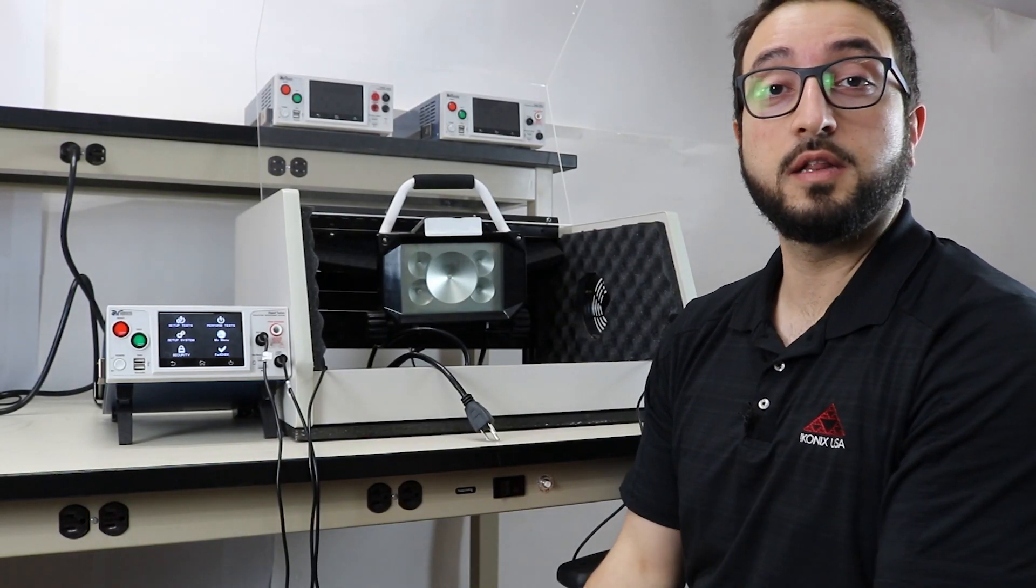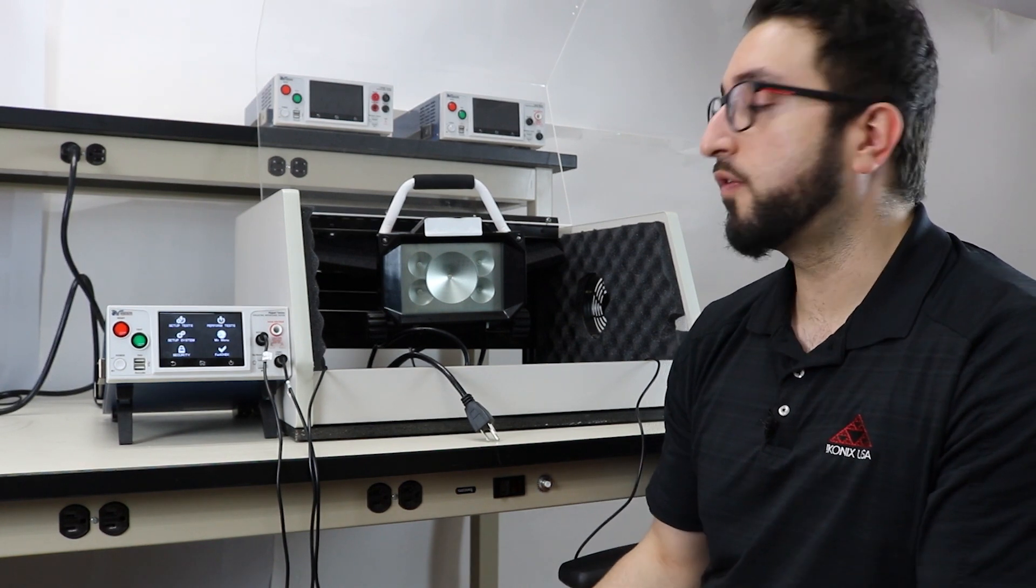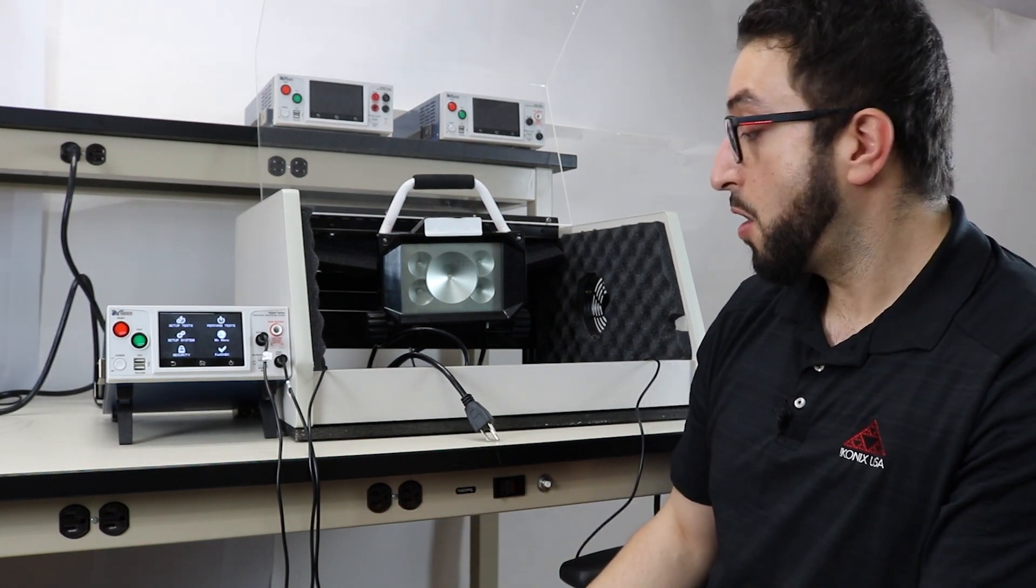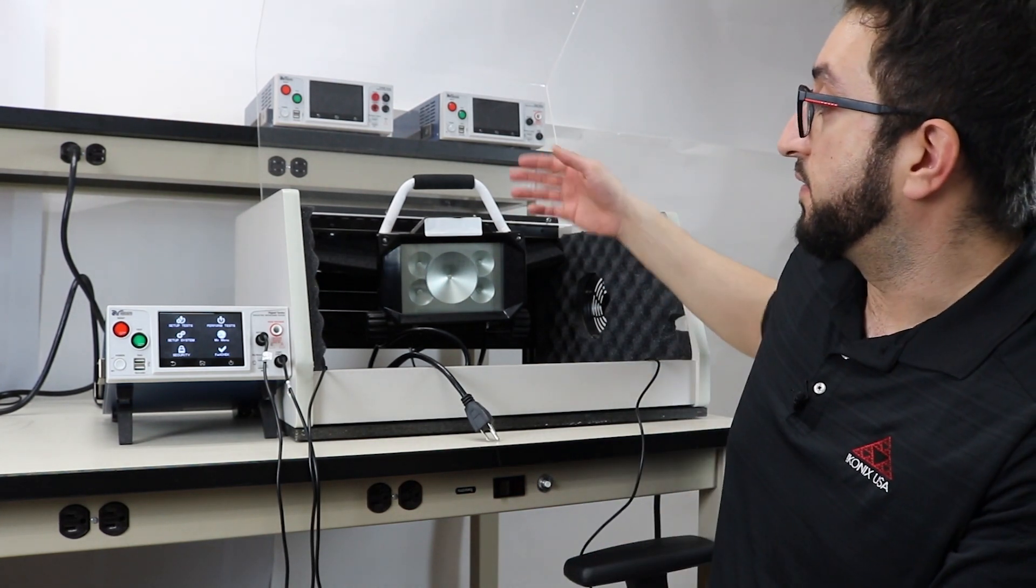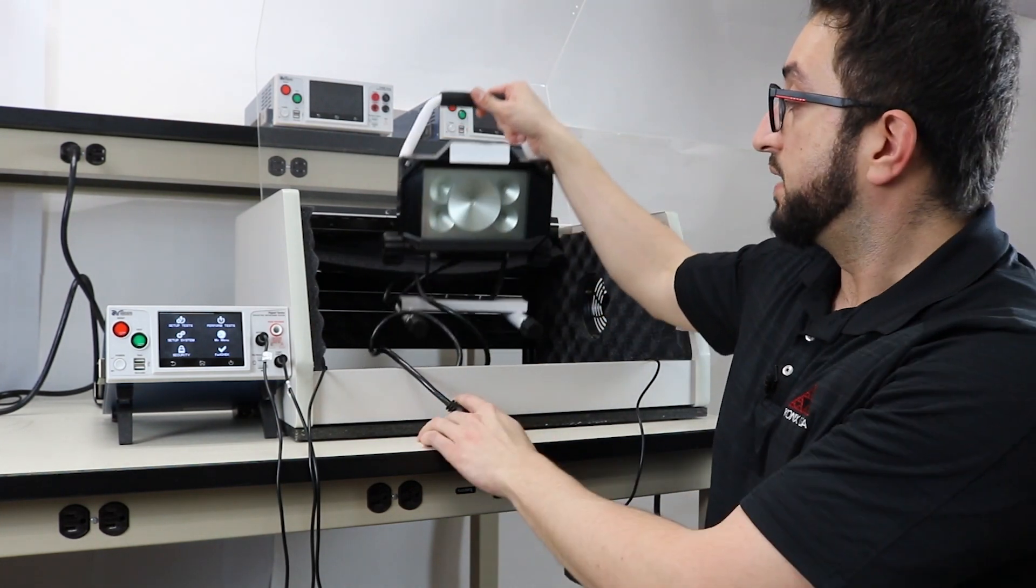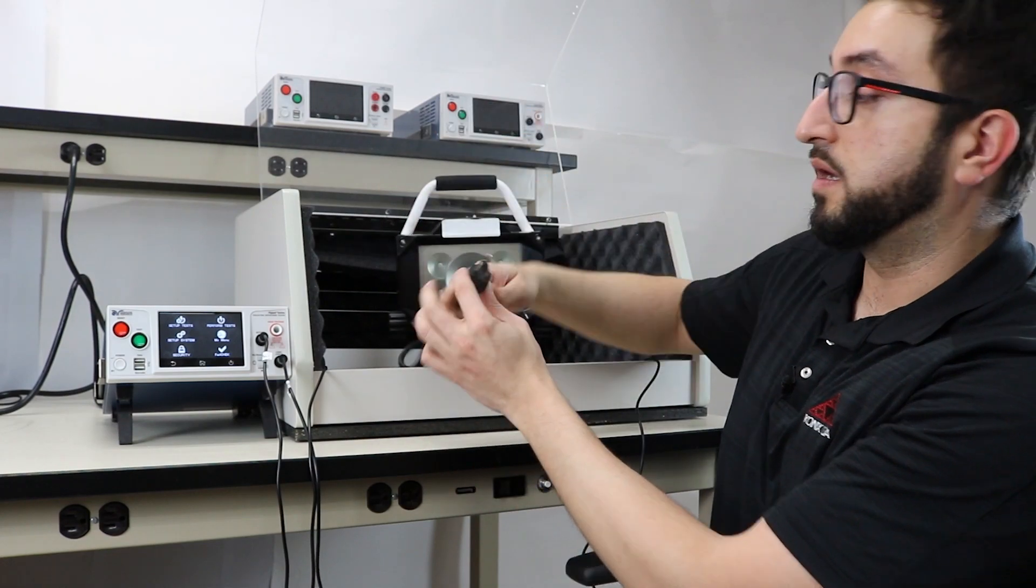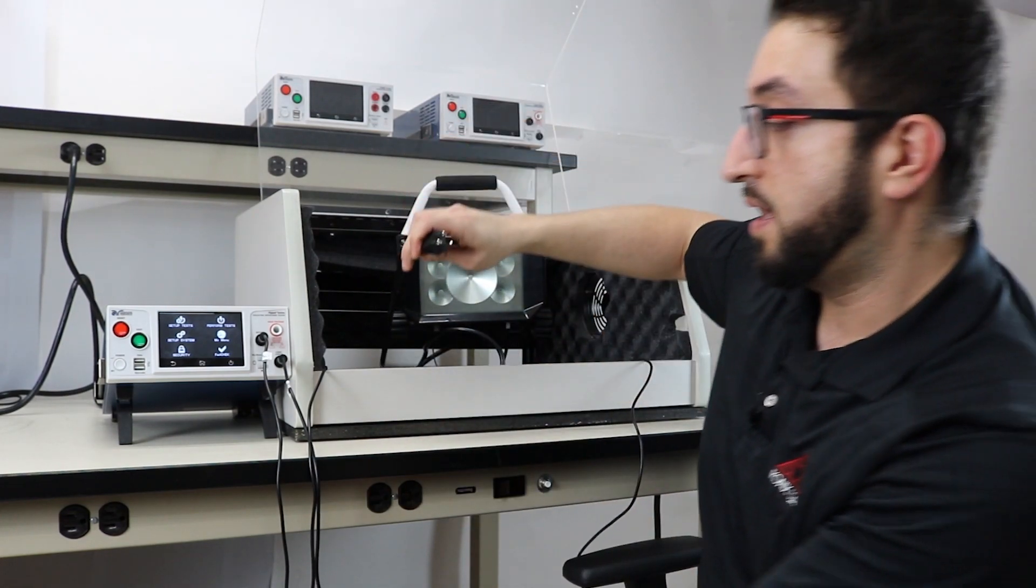Okay, so now let's take a look at how simple it is to actually perform a ground continuity test on a class 1 device that has a ground circuit. The device that we're going to test today is an LED lamp with a three prong line cord.